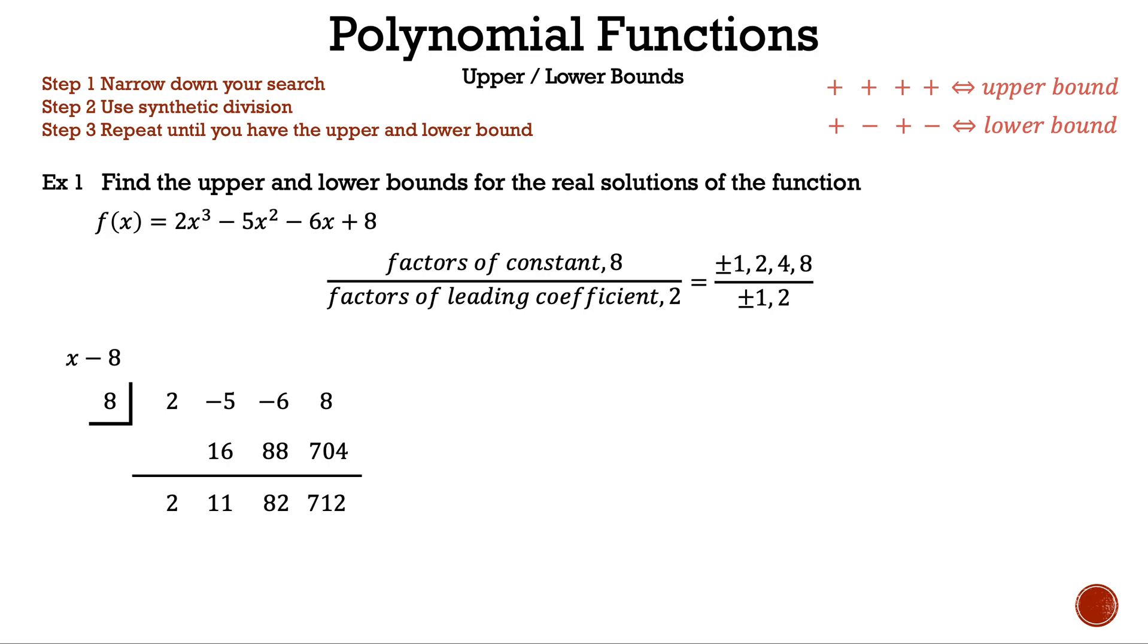For instance, if we start with 8, our result is an upper bound because all the numbers on bottom are positive. So we didn't eliminate any numbers. We only found information that we already knew, that 8 is an upper bound. Let's take a closer look at the numbers: 2, 11, 82, 712. The 712 tells us we're too far away from the least upper bound.